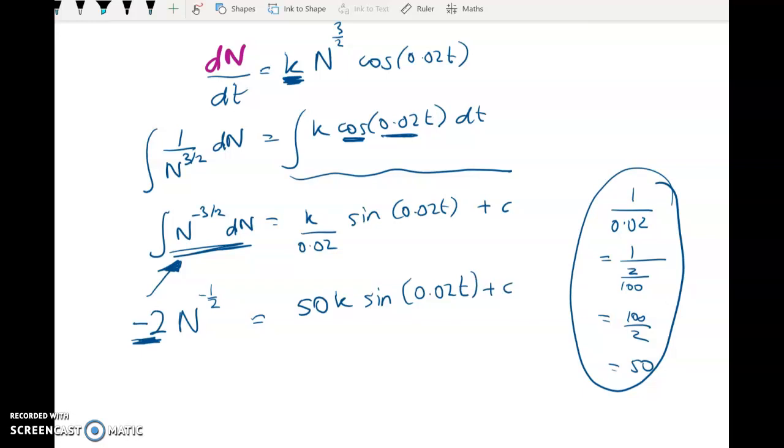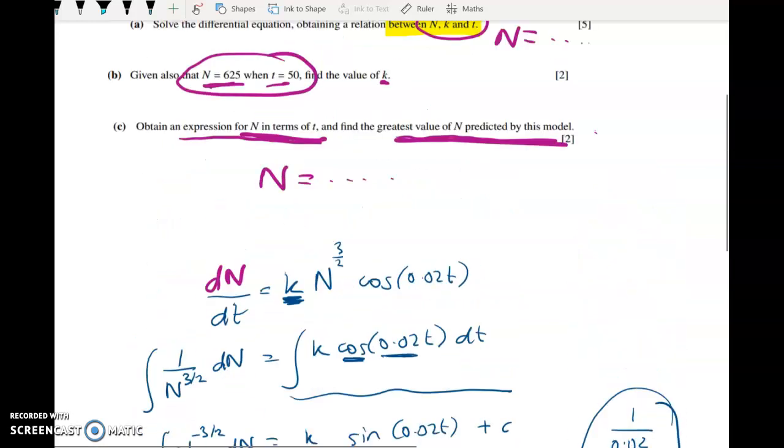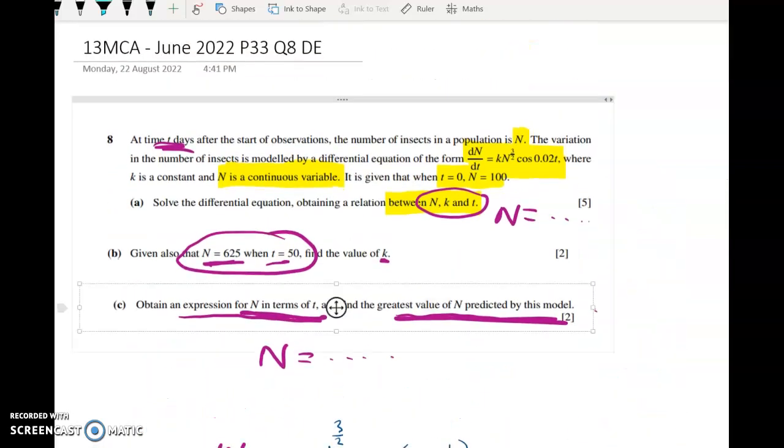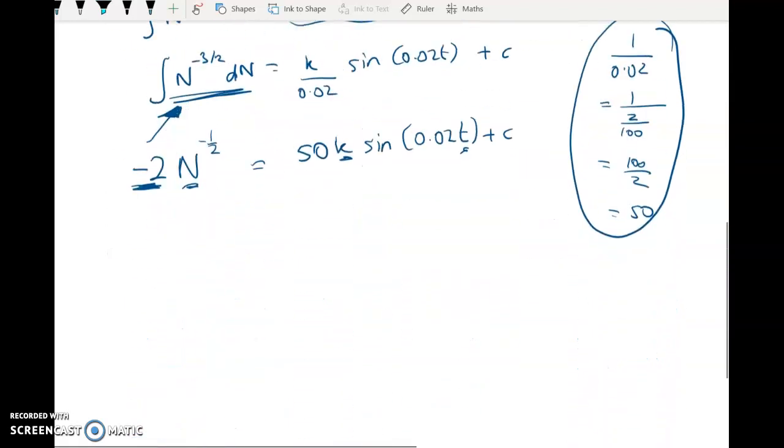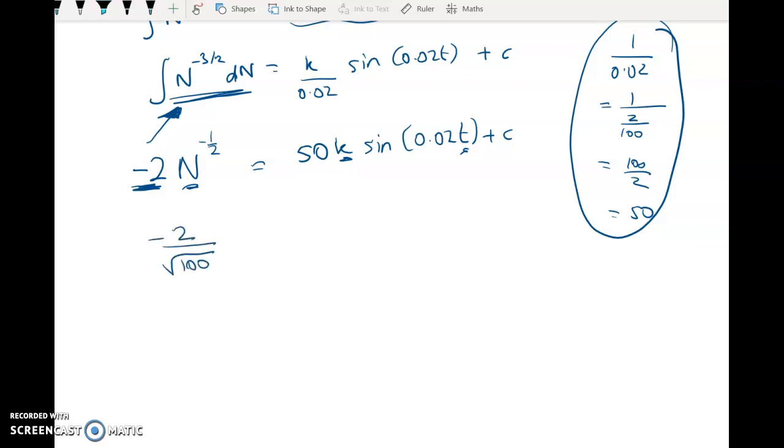Now that's enough to get a relationship between N, T, and K, but I've still got to use, it's not quite enough for this first five marks because I have to get rid of that constant C. So when T equals 0, N equals 100. So negative 2 over root 100 equals 50K sine of 0 plus C. So negative 2 over 10, negative 0.2 equals 0 plus C, C equals negative 0.2.